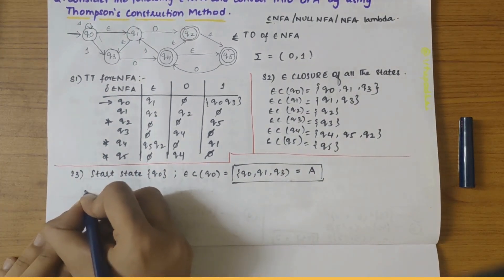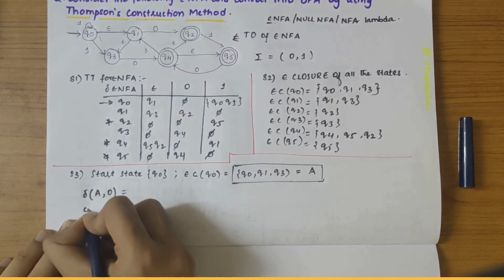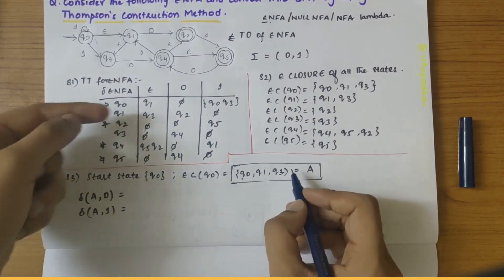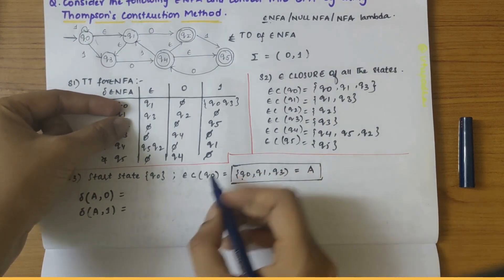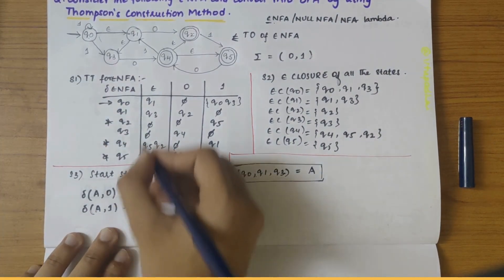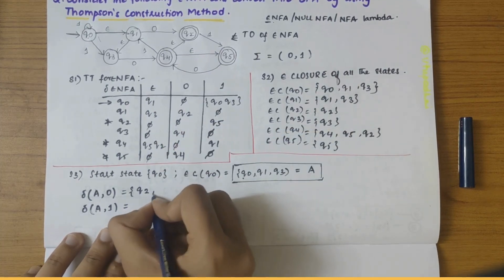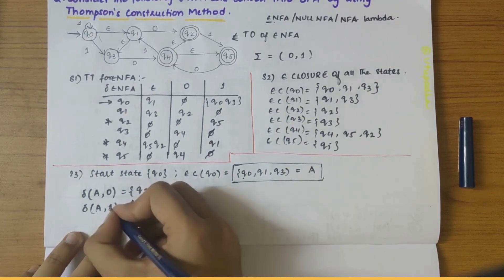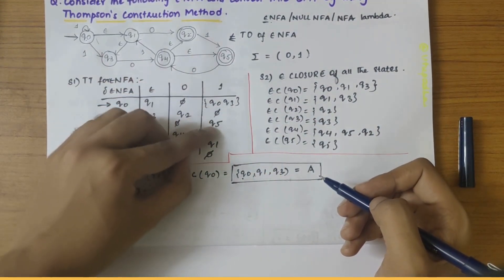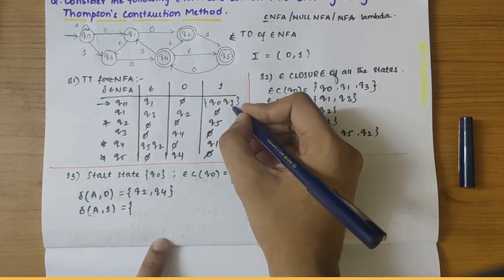Now find the transition of constant A on 0 and on 1. A comprises Q0, Q1, and Q3. Transition of A on 0 gives Q2 and Q4. Transition of A on 1: Q0, Q1, and Q3 on 1 gives Q0 and Q3.